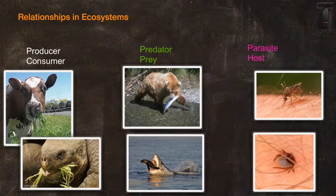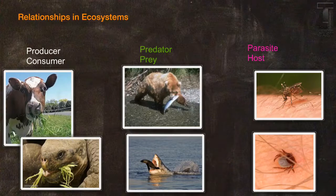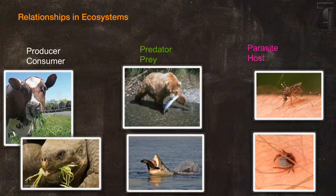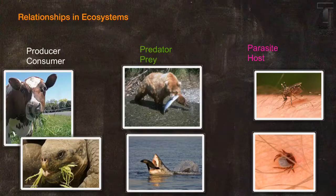Based on these pictures, you can see the producer here is the grass that is being eaten by the cow and the tortoise. The predator-prey relationships we see here are the bear catching the fish and the shark going for a seal. And for parasite to host, the parasites are the mosquito and the tick, with the host being a human, which you can see with the human skin and hair.